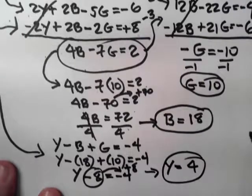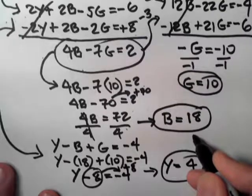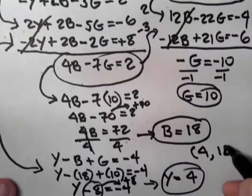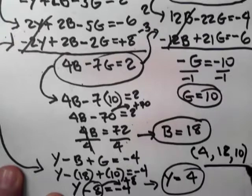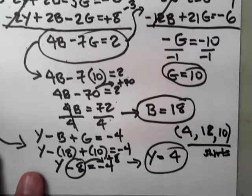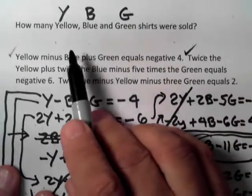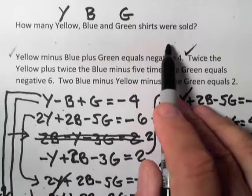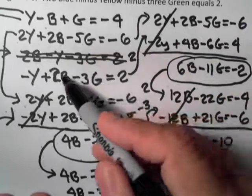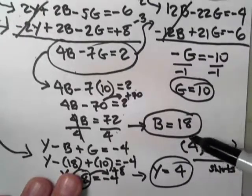The solution for how many shirts were sold: yellow Y equals 4, blue B equals 18, and green G equals 10. We knew this was a 3x3 system because they asked us to find three things — yellow, blue, and green shirts — so we needed three variables and three equations. We translated those, used standard methods to solve the 3x3 system, and found out how many of each shirt were sold.